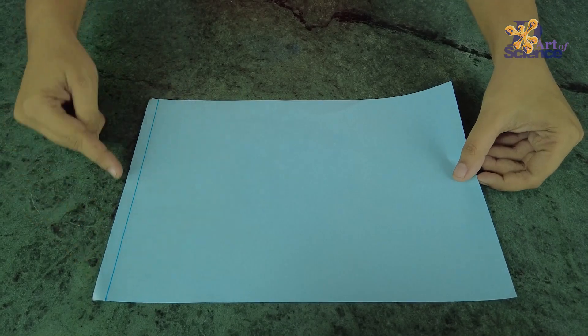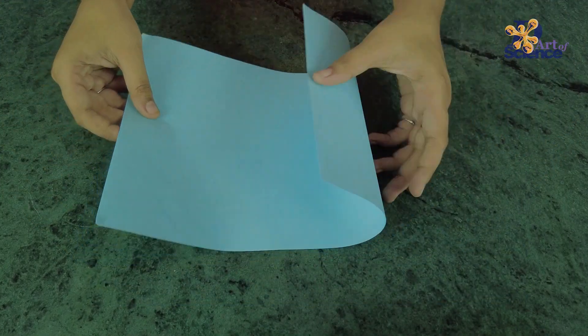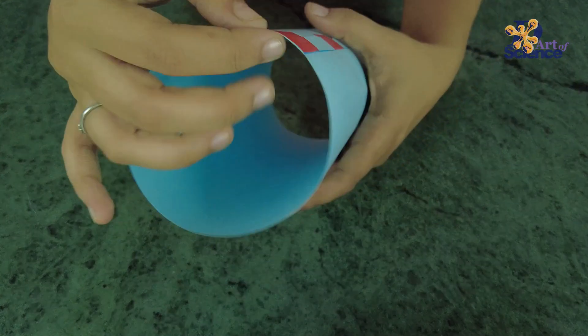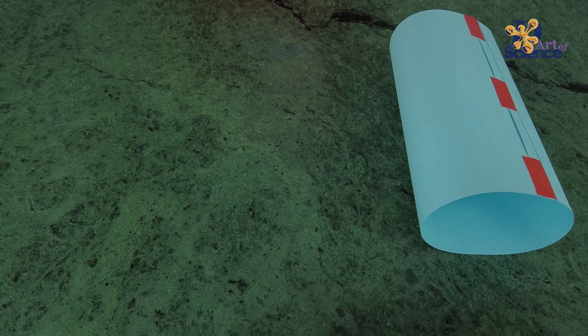And finally, for a cylindrical column, just leave a 1cm gap for the overlapping flap and roll the paper into a cylinder. And that's it!